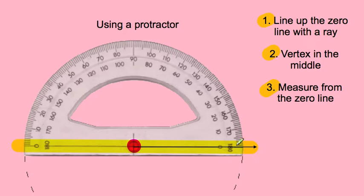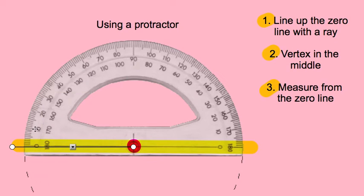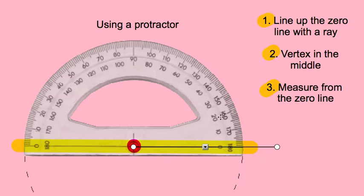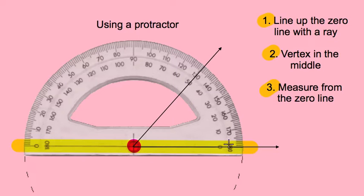We just ignore these outer numbers — they're for when the ray is measured from the other zero. If the ray is on this zero, we use these numbers: 10, 20, 30, 40, 50, 60, 70, 80. 90 is the same for both, then 100 and so on. So if you have another ray coming off the same vertex and it's going through there, we measure at 10, 20, 30, 40 — it's at the 50-degree marking.